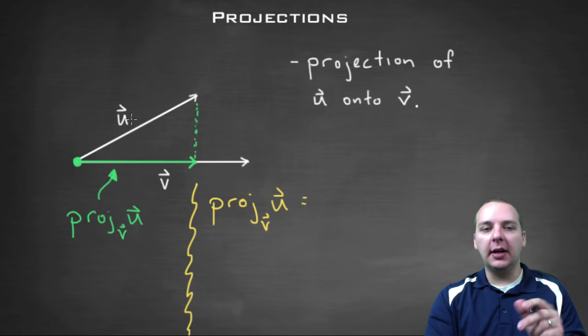Notice that would be very different than projecting v onto u. So this green line, this green vector is the guy we're going to try to find. And there's a formula for it that I'm going to give you right now.